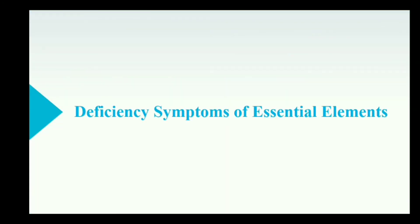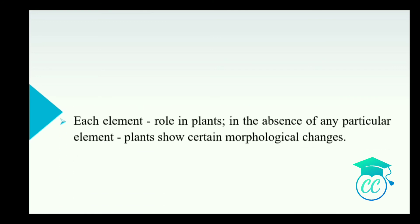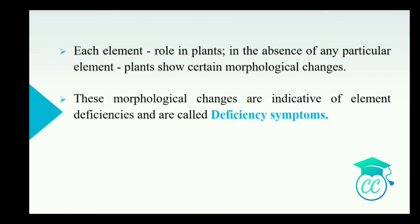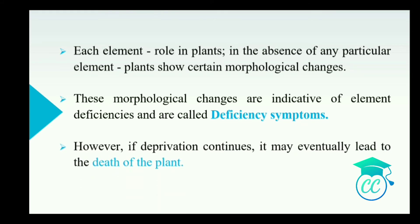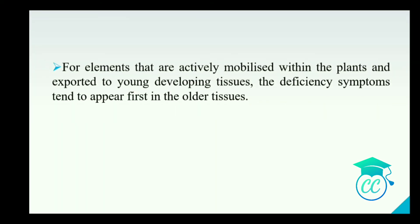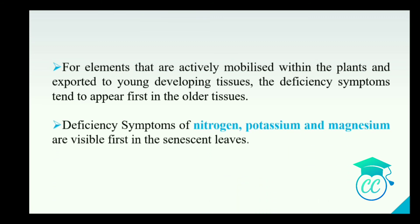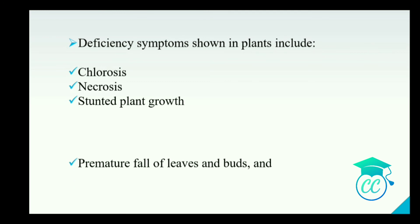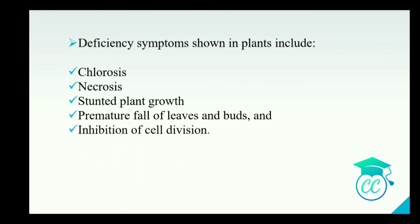The next topic is deficiency symptoms of essential elements. Each element has a particular role in plants, so the absence of that element shows morphological changes called deficiency symptoms. If the deficiency continues, it eventually leads to the death of the plant. Elements that are actively mobilized within the plant are exported to young developing tissues, so deficiency symptoms tend to appear first in older tissues. Deficiency symptoms of nitrogen, potassium and magnesium are first visible in senescent leaves. Deficiency symptoms include chlorosis, necrosis, stunted plant growth, premature fall of leaves and buds, and inhibition of cell divisions.